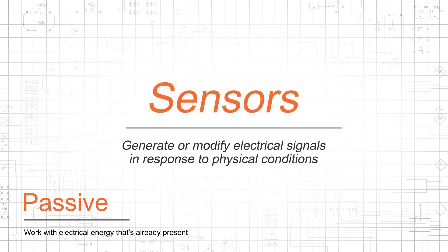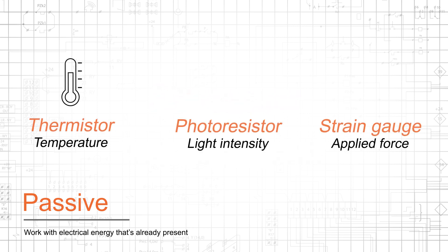Sensors generate or modify electrical signals in response to physical conditions. Passive sensors use specialized applications of resistance and include thermistors, photoresistors, and strain gauges.